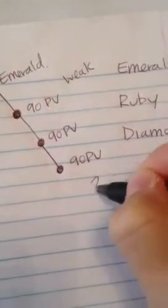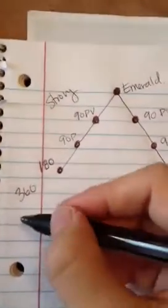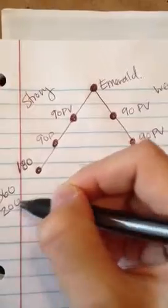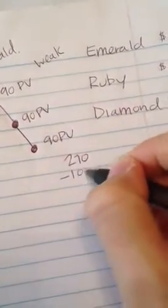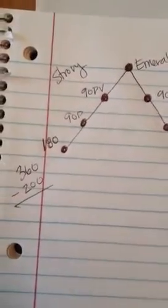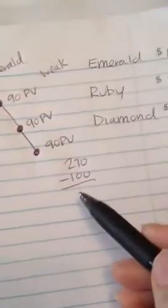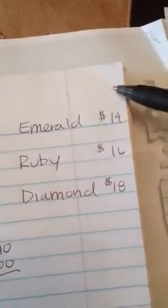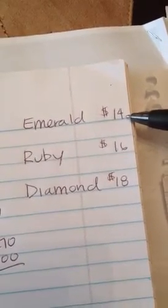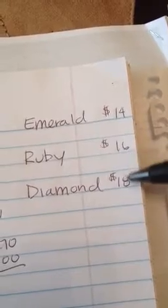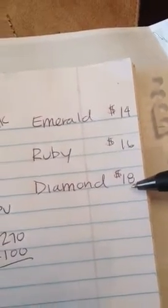Now for every 200 PV from your strong leg meets 100 PV from your weak leg, you bonus cycle. So 200 meets 100 from your weak leg, you bonus cycle. Now depending on what your rank is in the business, if you're Emerald, you bonus cycle $14, Ruby $16 every bonus cycle, and then Diamond $18 every bonus cycle.